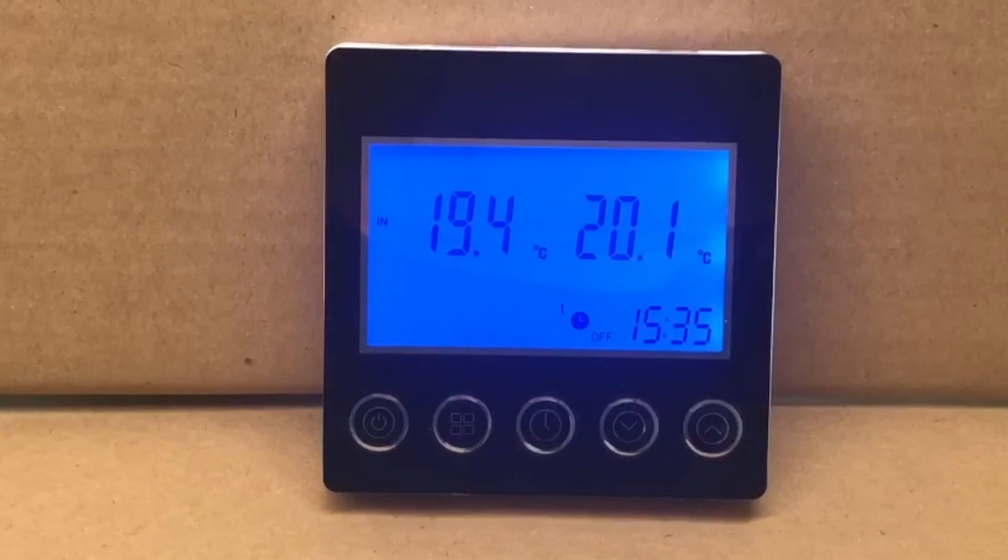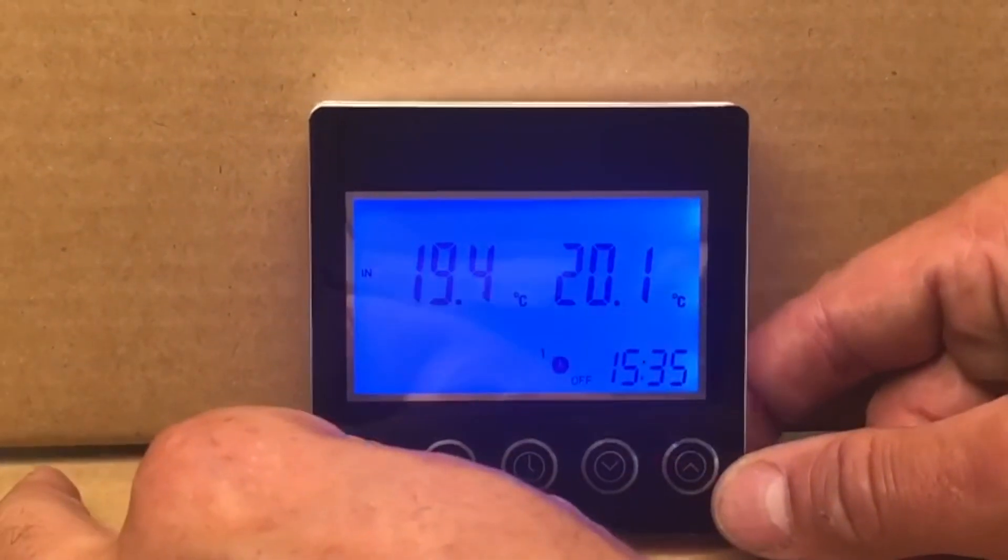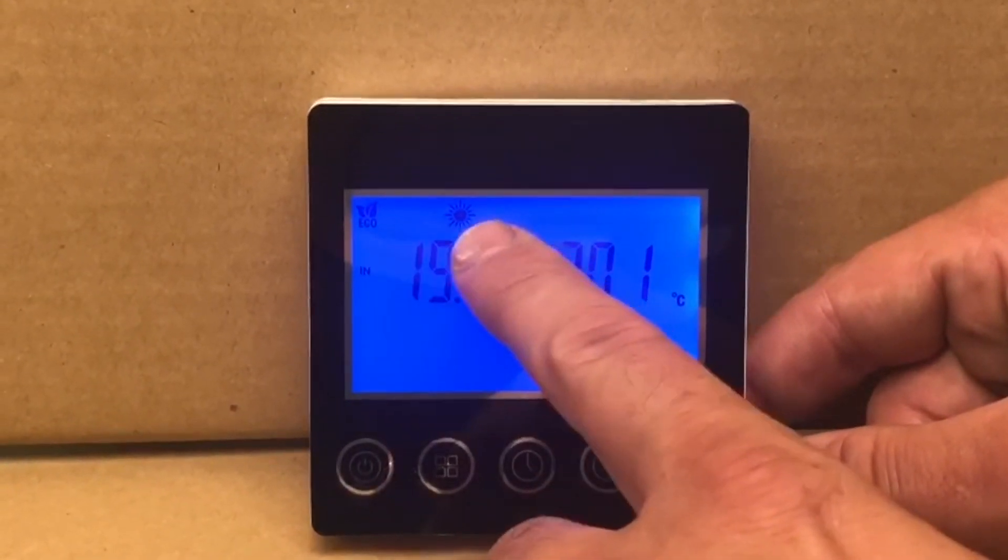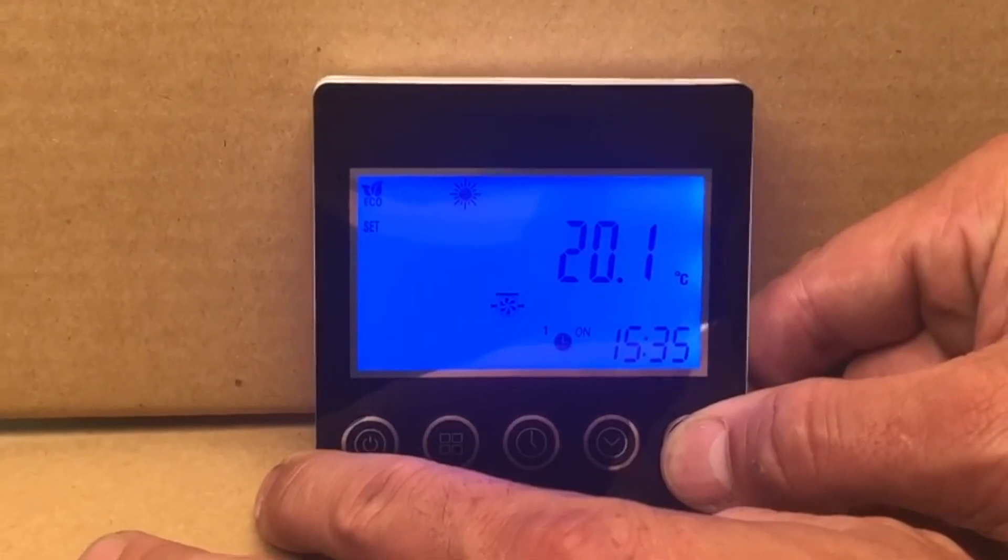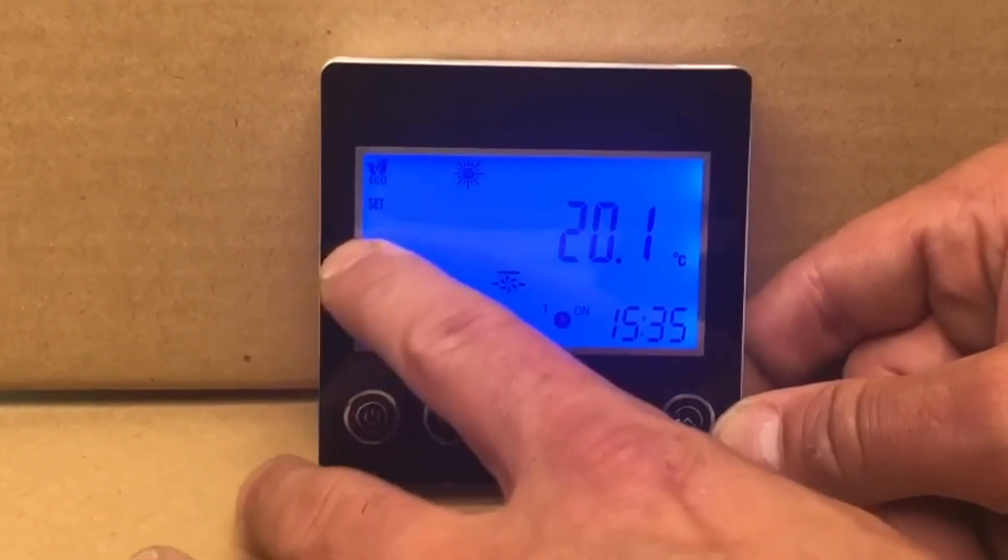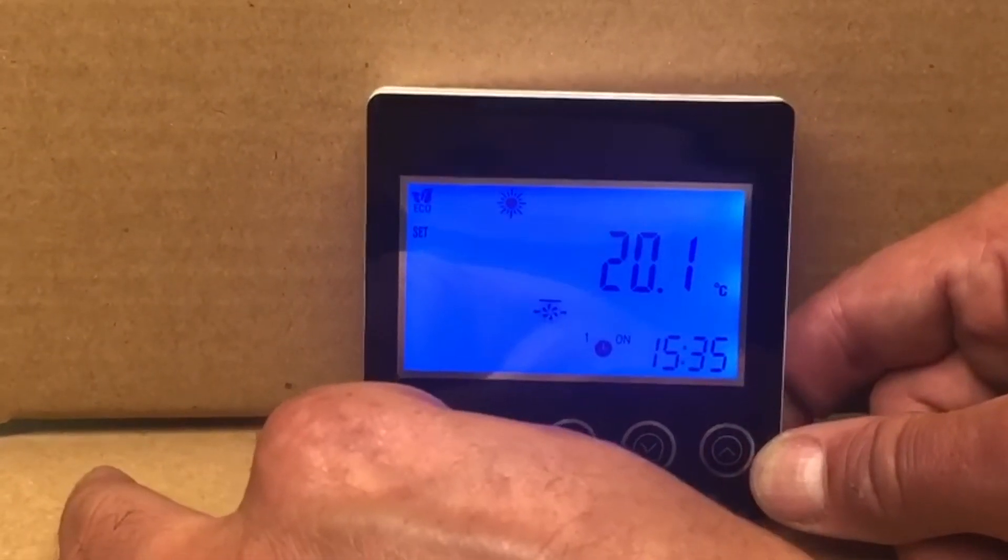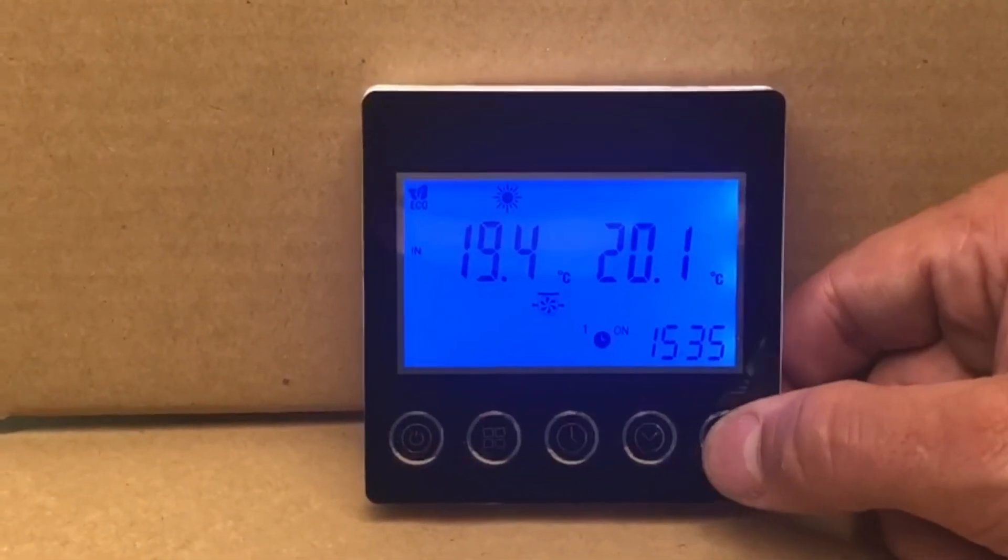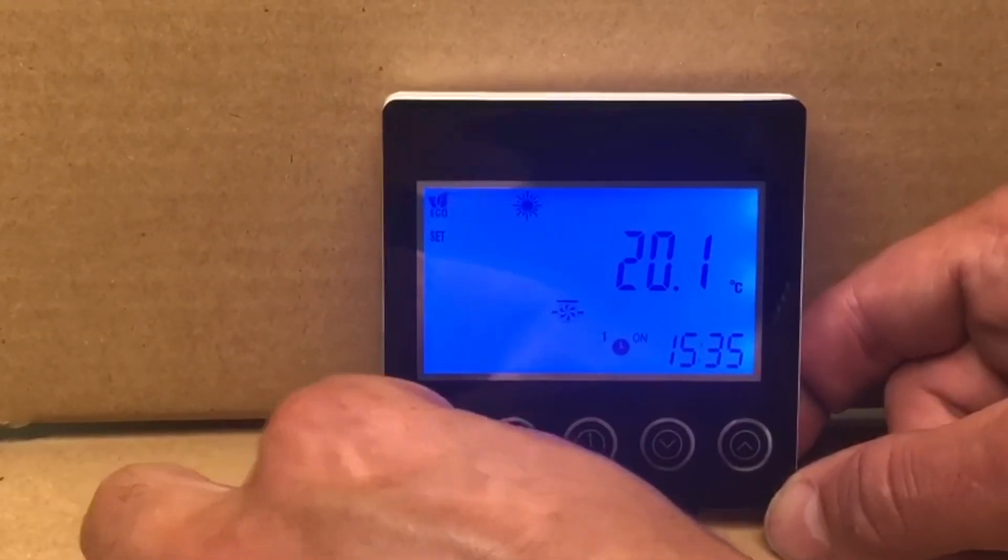Now the last thing we need is the ability to set the temperature. To do that, we need to have the unit in the on position with whichever mode we've selected. Then we can press the up and down arrows, which will change the set point. When we're happy, just press the power button to save it. To prove that it's saved, we can press the up arrow again and it comes up straight away at the set point.